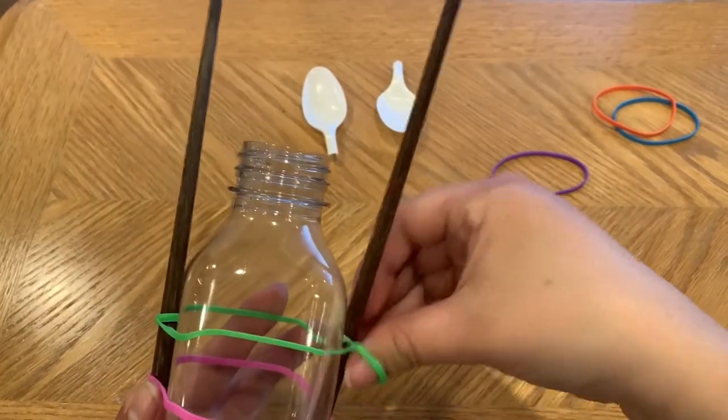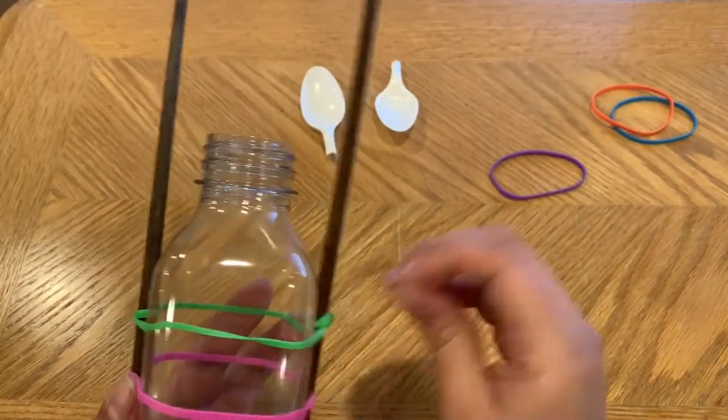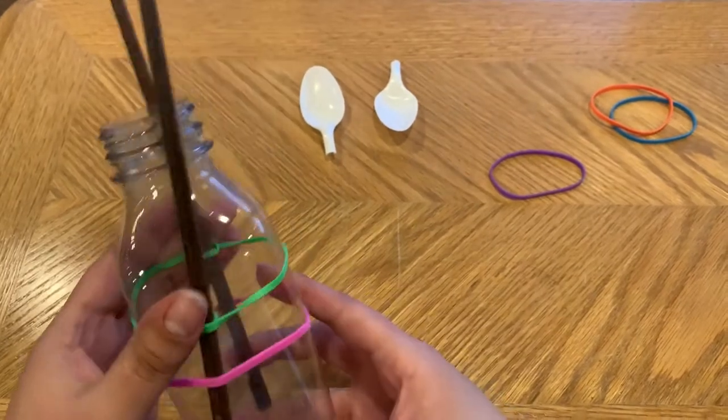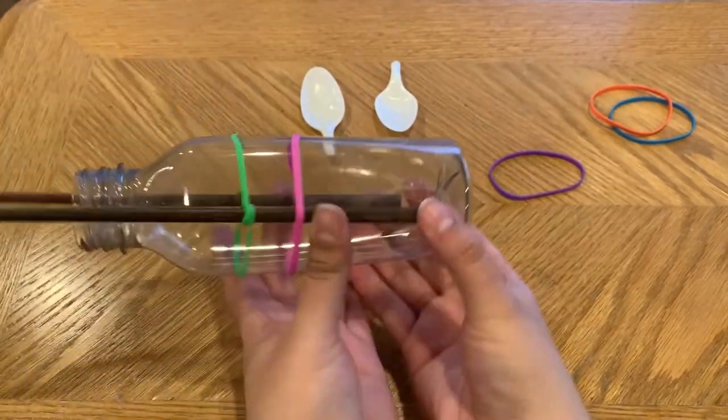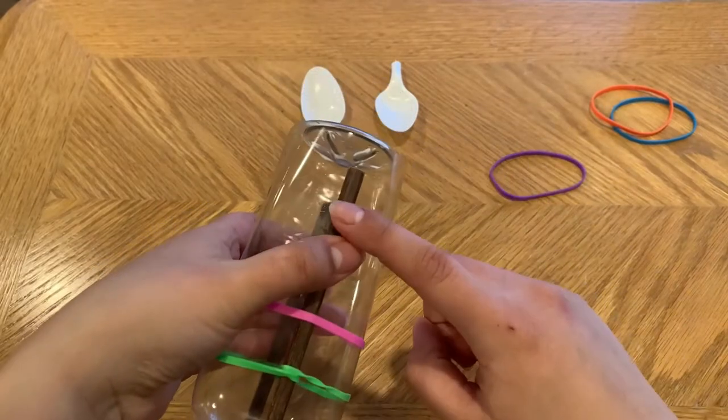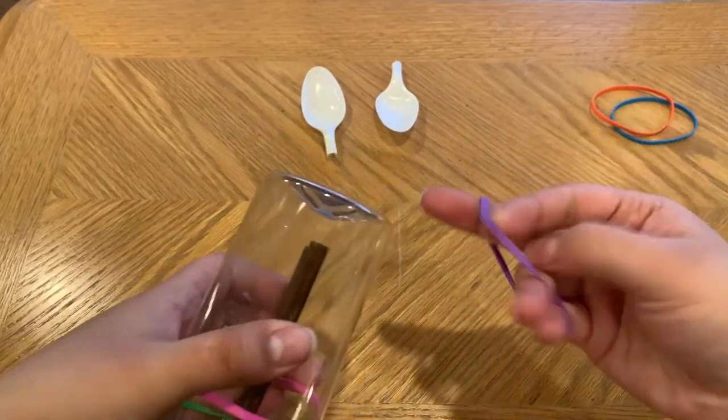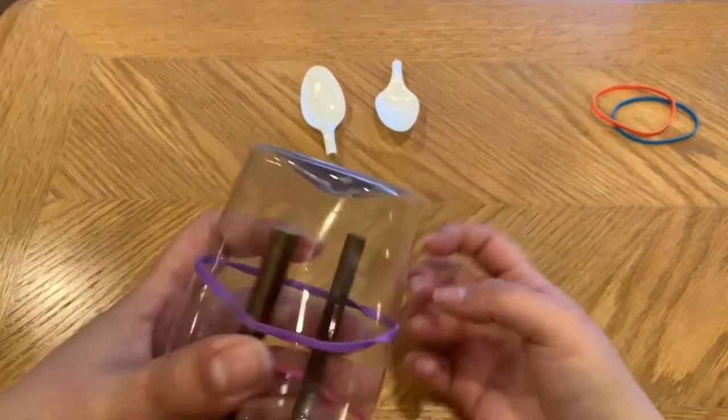Now that we've got our green rubber band on, we're going to flip our boat upside down and take another rubber band and do the same thing on the other end.